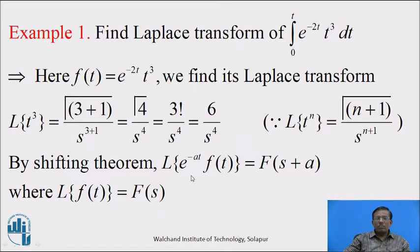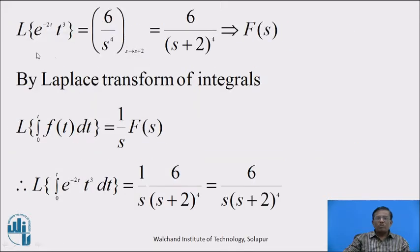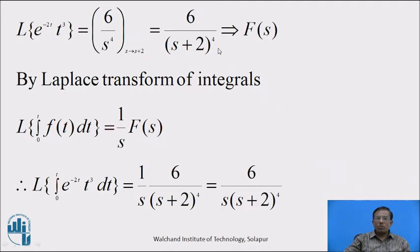Now, by the first shifting theorem discussed earlier, Laplace transform of e raised to minus at into f of t equals F of s plus a, when Laplace of f of t equals F of s. By this property, Laplace transform of e raised to minus 2t into t cube equals, in the Laplace transform of t cube that is 6 upon s raised to 4, we replace every s with s plus 2. That gives 6 upon (s plus 2) raised to 4, and this result is denoted by F of s.